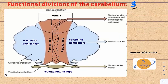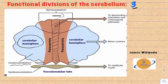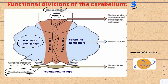Here is an image showing the clinically important functional divisions. The cerebellar hemispheres on each side form the cerebrocerebellum. The vermis on the midline and the adjacent paravermis form the spinocerebellum. Finally, the flocculonodular lobe is called the vestibulocerebellum. Each functional division has its own distinct function.